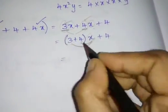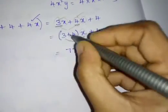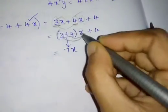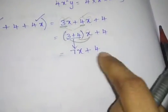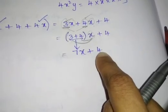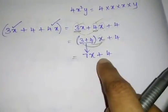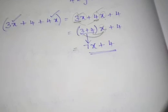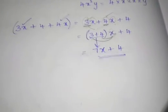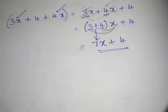Now 3 + 4 is 7, so we get 7x. Then we have + 4. This 4 will not be added with 7x — why? Because 4 is one term and 7x is another term, so both are unlike terms. You have to simplify until you are getting unlike terms. Even if it is addition or subtraction, you solve until you are getting unlike terms.